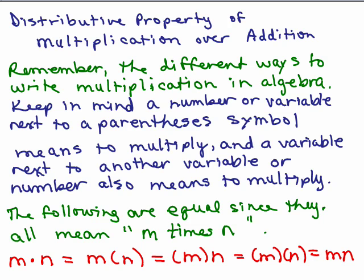Remember the different ways to write multiplication in algebra. Before we do the property, we have to go over a couple things. Keep in mind a number or a variable next to a parenthesis symbol means to multiply. And a variable next to another variable or number also means to multiply. So the following are equal since they all mean m times n. You could have a dot between the m and the n. You could have one of the variables in parenthesis, both variables in parenthesis, or you could put the variables right next to each other.